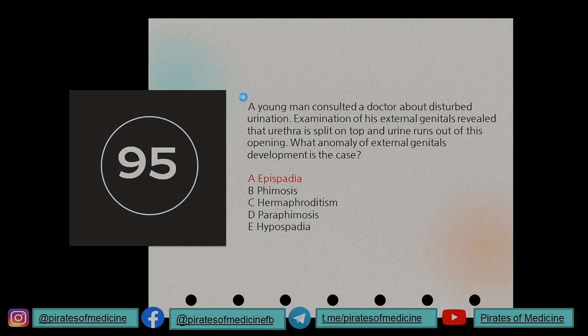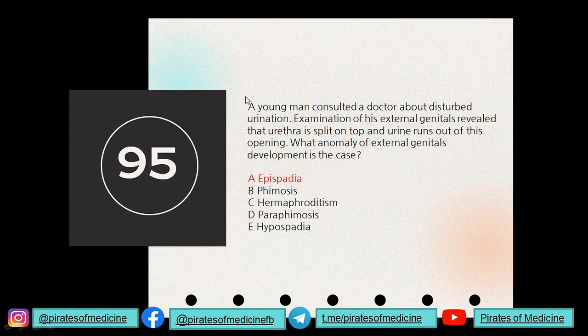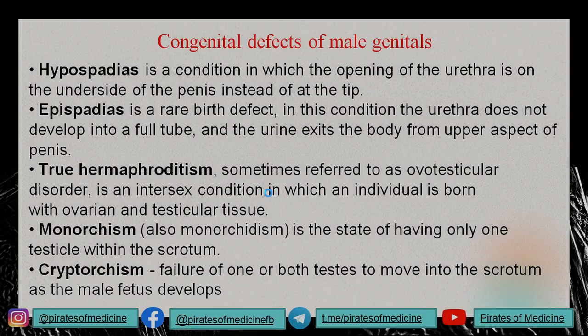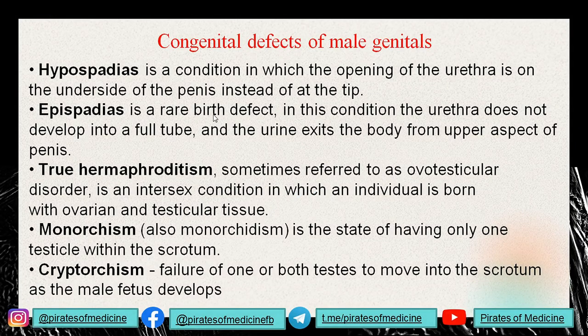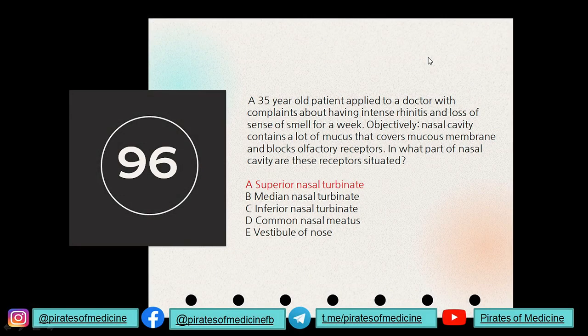Question 95: a young man consulted a doctor about disturbed urination. Examination revealed the urethra is split on top and urine runs out of this opening. We just studied this — urethra split on top means urine exits from the upper aspect of the penis, so the answer is epispadias.